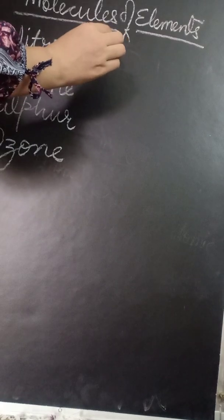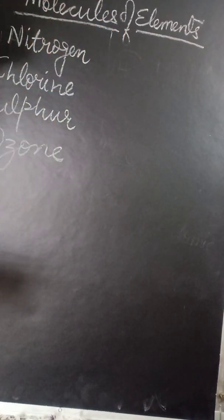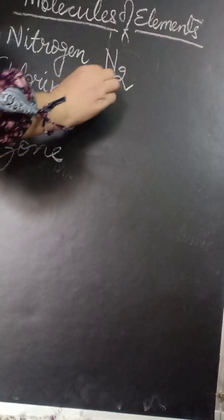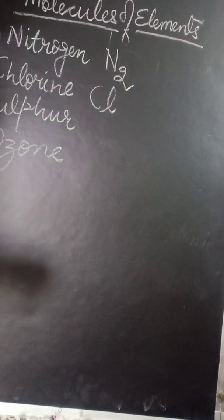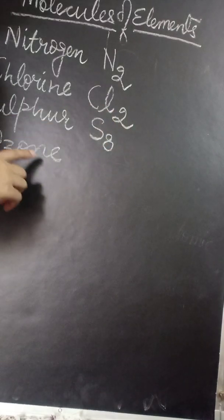So here, nitrogen also combines with one nitrogen atom with another atom of nitrogen and forms a molecule of nitrogen gas N2. Chlorine also combines like this and forms a diatomic molecule. Sulfur has 8 atoms in one molecule and ozone has 3 atoms in one molecule.